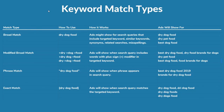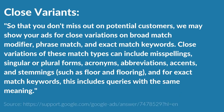First I'm going to start with broad match. But before I go through keyword match types, one thing you need to know about are close variants. I pulled this from Google — you can see the source at the bottom. It says: so that you don't miss out on potential customers, we may show your ads for close variations on broad match modifier, phrase match, and exact match keywords. Close variations can include misspellings, singular or plural forms, acronyms, abbreviations, accents, and stemmings such as floor and flooring. And for exact match keywords, this includes queries with the same meaning.